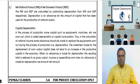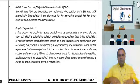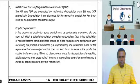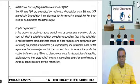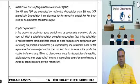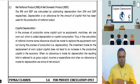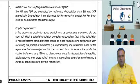Gross domestic product talks about whatever goods and services are produced in our own country, by anyone. So people of India producing in India is India's GDP, but at the same time foreign people producing in India is also India's GDP, because they are produced in India.